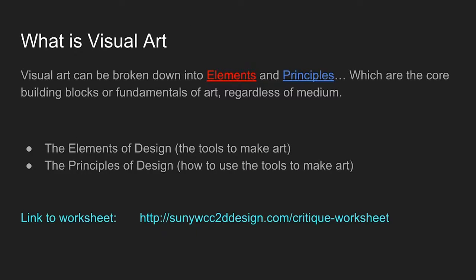What is visual art? Visual art can be broken down into elements and principles, which are the core building blocks or fundamentals of art regardless of medium. The elements of design are the tools to make art. The principles of design are how to use the tools to make art.